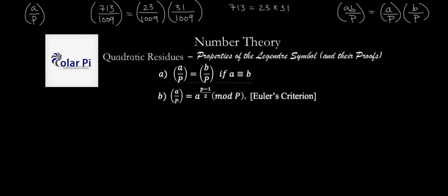Part B, or the second property I show will say that A over P is equal to A to the power of P minus one over two mod P. And this is Euler's criterion. So this is very familiar to us because I already made three videos on it.